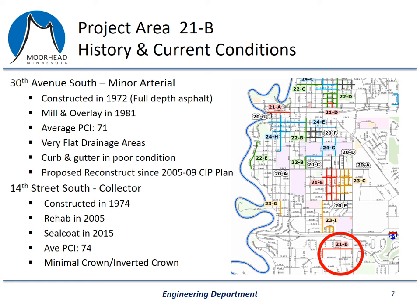On this slide, I've got the history and current conditions of 30th Avenue South and 14th Street South. There is a picture of a portion of the city's five-year CIP map, and you can see project 21B circled at the bottom — that's 30th Avenue South and 14th Street South. 30th Avenue South was constructed in 1972. There was a mill and overlay in 1981, but there hasn't been any major maintenance performed on the street since then. The average PCI for this stretch of road is 71, but there are some other significant issues: the road and curb and gutter is very flat, which doesn't lend itself to good drainage, and the curb and gutter is generally in poor condition. This road has actually been on the city's five-year CIP plan since 2005 but has been delayed repeatedly because of funding concerns.